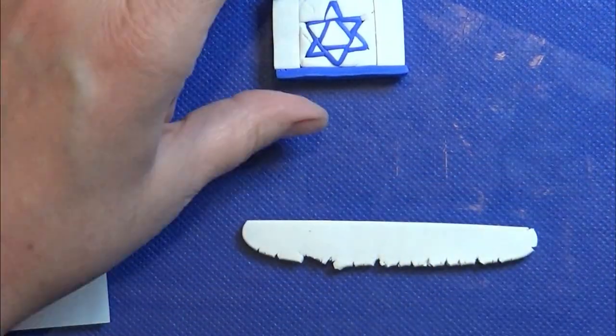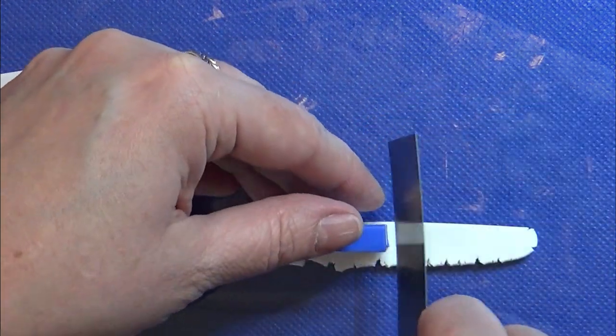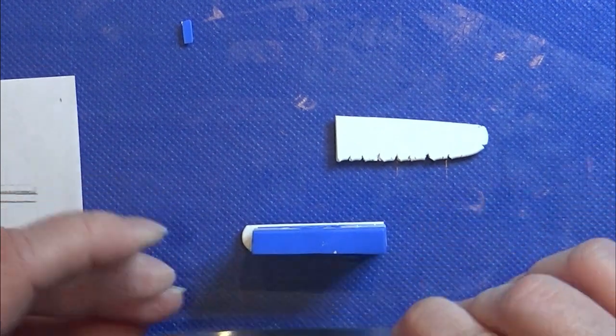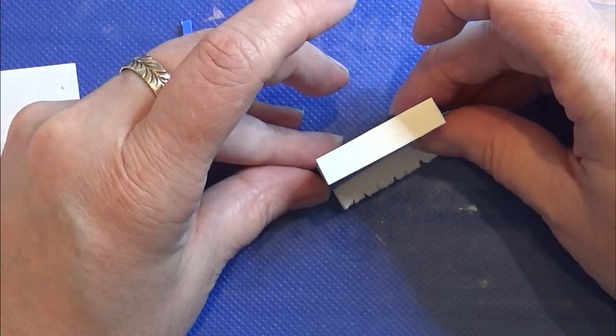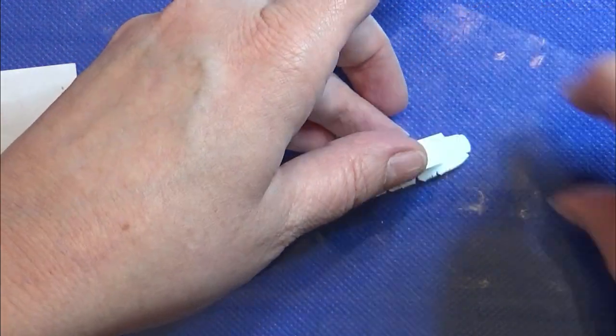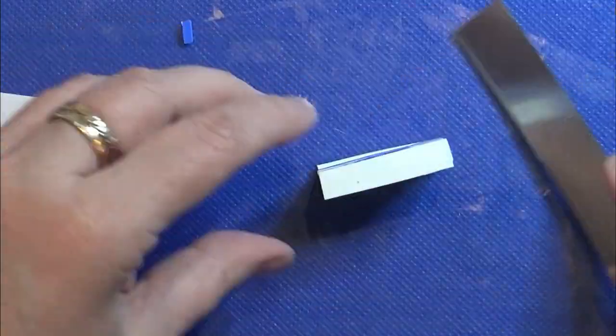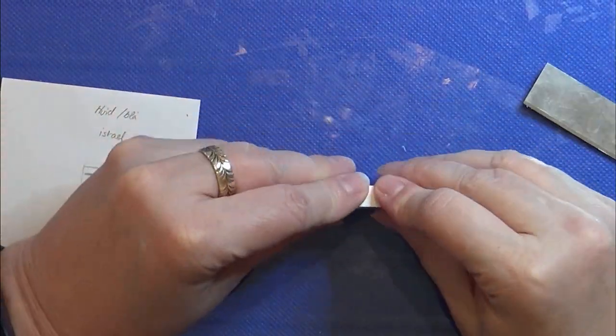I then rolled out a piece of white clay on a setting three and I'm putting that on top of the blue on both sides of the flag. So here we have the done result of the flag.